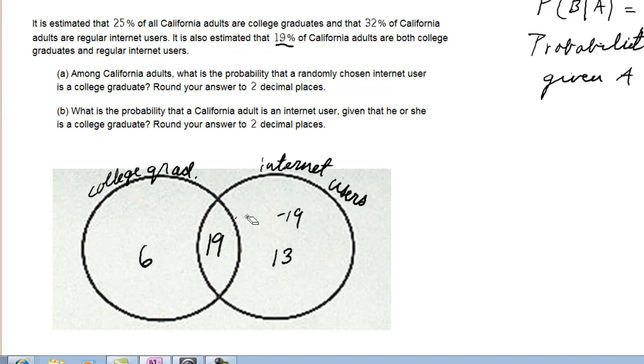There's another area that we could fill in — that's the area outside the circles. 25 plus 13 plus that gives us 38, so 62% is outside.